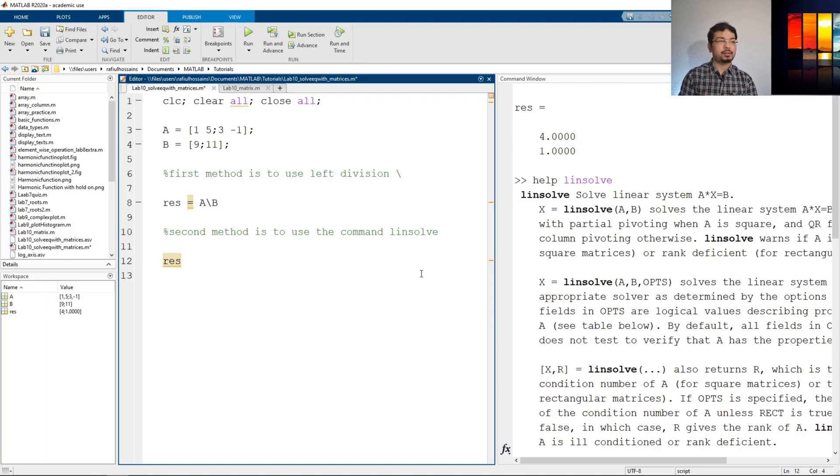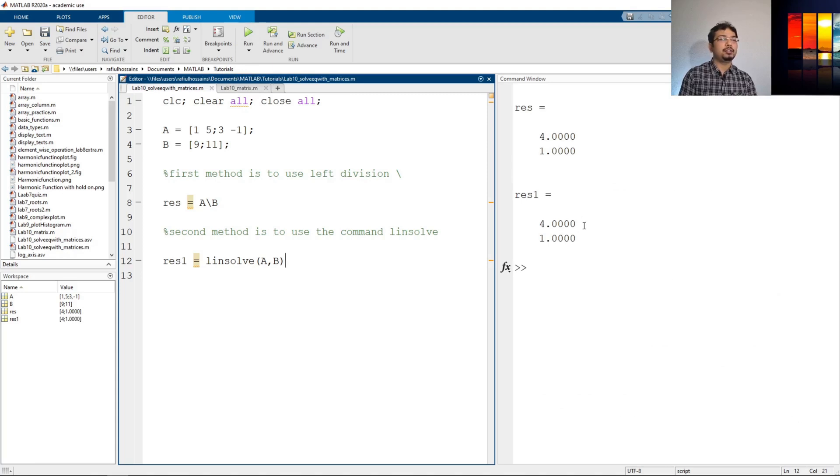So I'll say res_1 as another variable and then I'll use this linsolve A comma B. So I'll put this A matrix and B column vector and I told it to solve this system equation Ax equals to B for the x variable. Now if I just run it you can see it generated the exact same four and one solution. So here in this video we have solved these two equations using left division and secondly using linsolve. We can use either of them to solve system of equations in MATLAB.